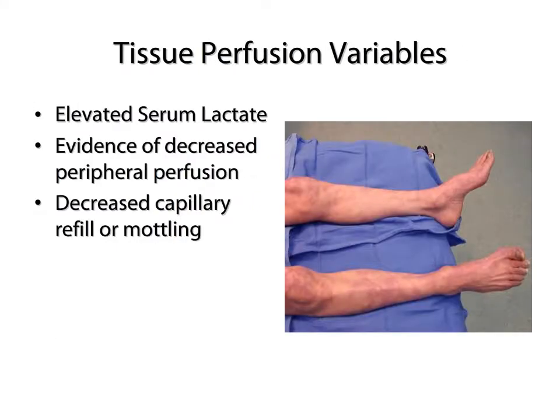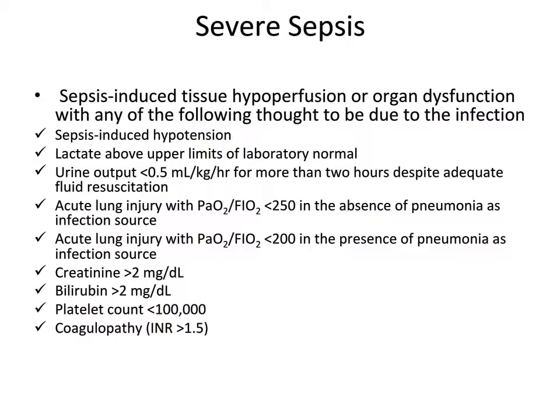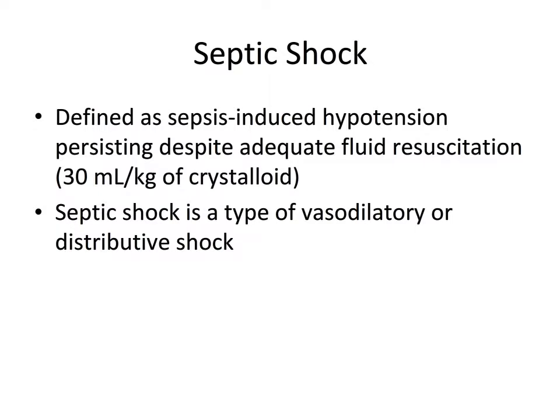There are also tissue perfusion variables. At the cellular level, we would measure an elevated serum lactate, and at a macroscopic level, we can see decreased capillary refill or mottling with evidence of decreased peripheral perfusion, as displayed in the accompanying picture. The definition of severe sepsis includes sepsis-induced tissue hypoperfusion or organ dysfunction, manifested as elevated lactate, decreased urinary output, acute lung injury with hypoxia or low PaO2, creatinine elevation, elevated bilirubin, coagulopathy with elevated INR, and decreased platelet counts. Septic shock is simply stated as sepsis-induced hypotension persisting despite adequate fluid resuscitation of 30 cc/kg of crystalloid. Septic shock is a type of vasodilatory or distributive shock.